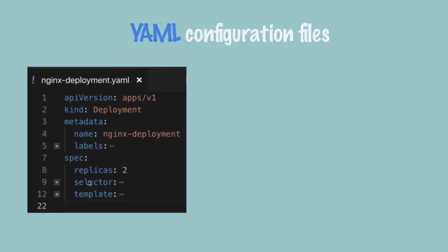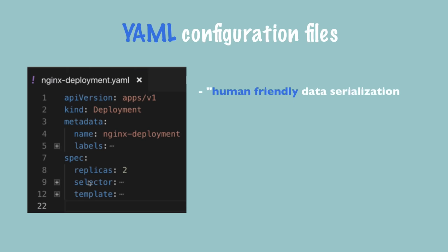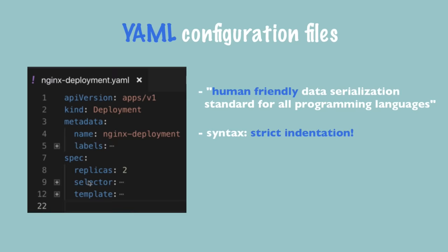Where does Kubernetes get the status data to automatically add and continuously update? That information comes from etcd — the cluster brain — which is one of the master processes that stores the cluster data. etcd holds at any time the current status of any Kubernetes component, and that's where the status information comes from.